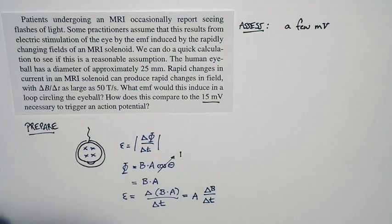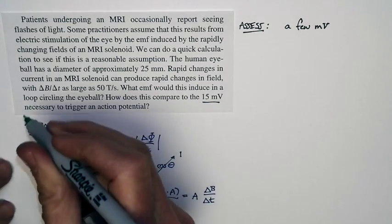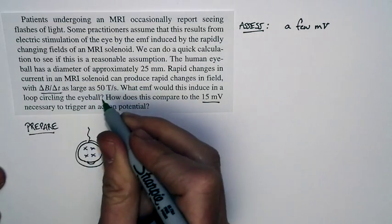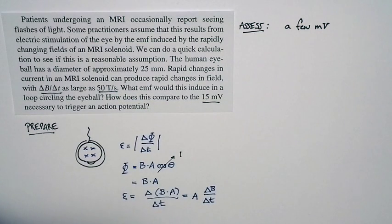And we're told what that number is. We're told delta B over delta T is 15 teslas per second. And so we have everything we need to be able to solve this problem.